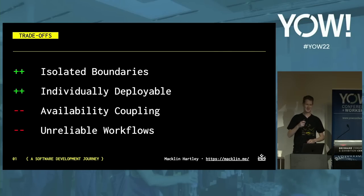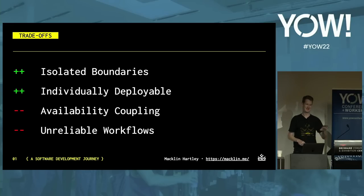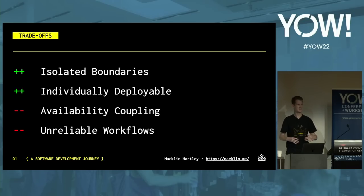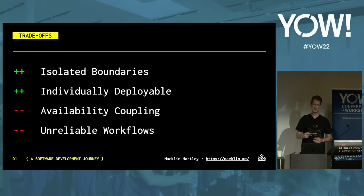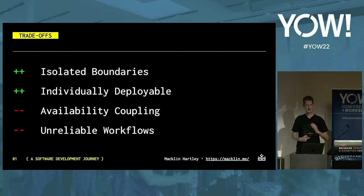By splitting up into multiple services, we were able to enforce boundaries allowing each team to independently deploy. However, other problems arose in terms of reliability when the team moved to multiple services. The availability of the system as a whole decreased due to availability coupling, requiring all three services to be available at the same time. This leads to workflows becoming unreliable — balances would be deducted but avatars were not being assigned to customers. What we'd actually implemented was a distributed monolith, not microservices.